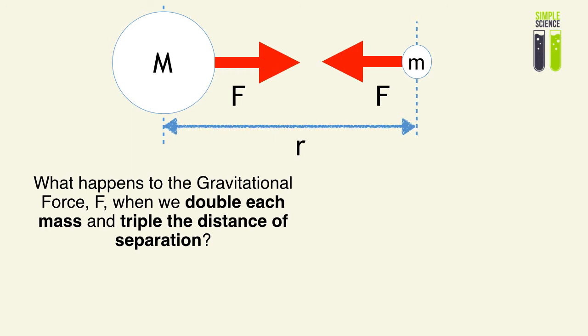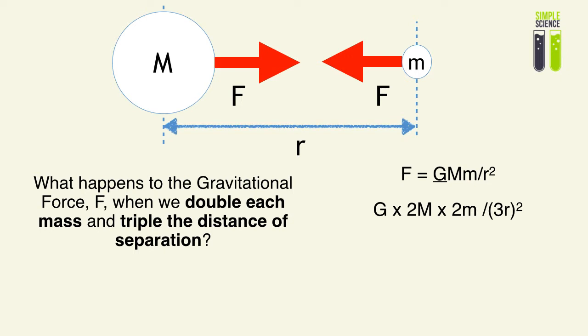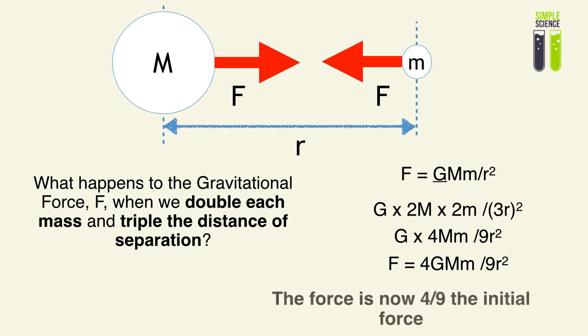What happens to the gravitational force when we double each mass and triple the distance of their separation? We take out our formula, and since we have doubled each mass, we get 2m and 2m. So it's G times 2m multiplied by 2m, divided by 3r bracket squared. We get G times 4 times the product of the masses, divided by 9r squared. The force is now equal to 4Mm over 9r squared — meaning the force is now four ninths of the initial force.